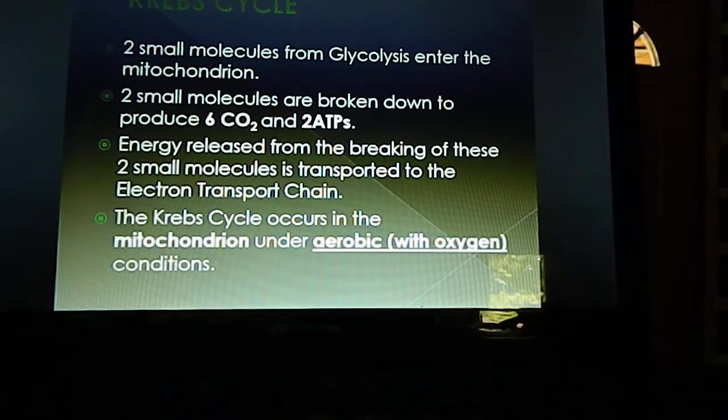The first part of cellular respiration was glycolysis, and then the next stage is called the Krebs cycle. Those two smaller molecules from glycolysis enter the mitochondrion. The site of cellular respiration is the mitochondrion, and those two molecules go through a cycle, the Krebs cycle, and it goes around twice because there's two of those three carbon molecules.